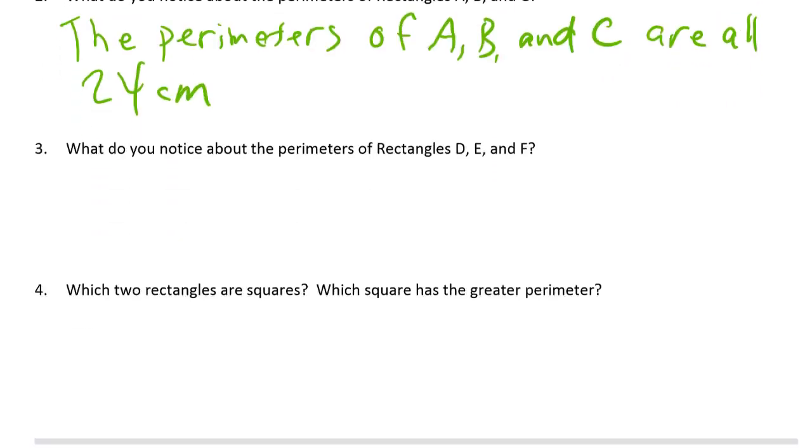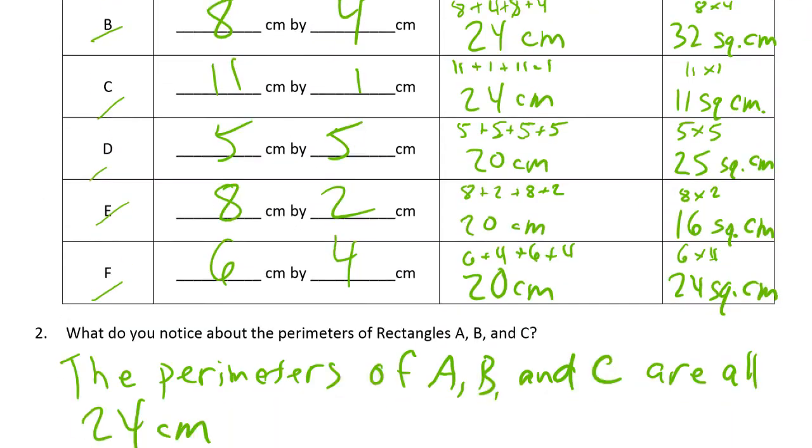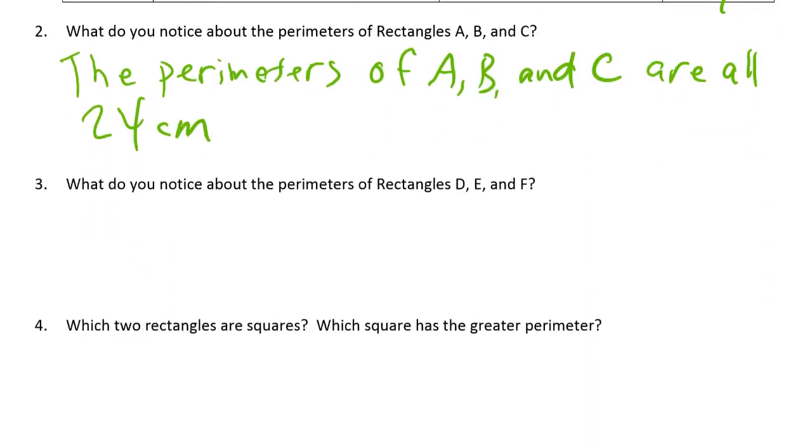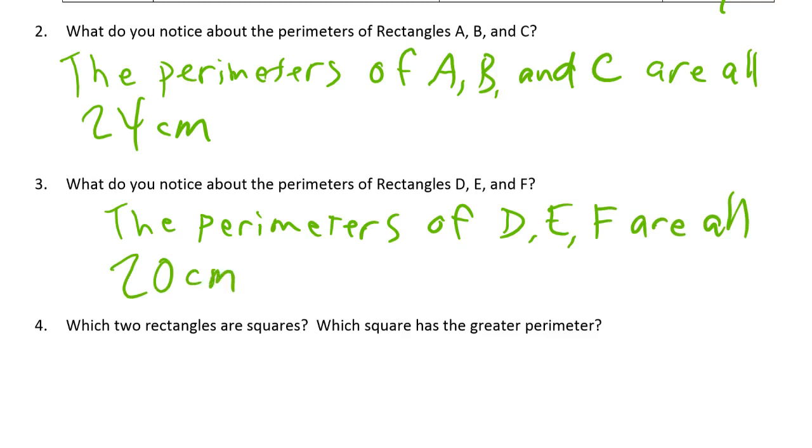What do you notice about the perimeters of rectangles D, E, and F? Those are also equal to each other, but they're different. They're equal to 20.